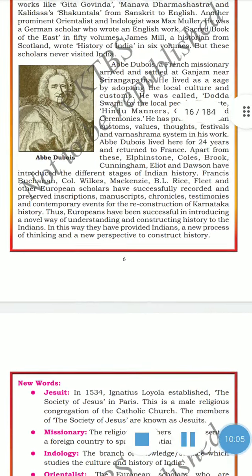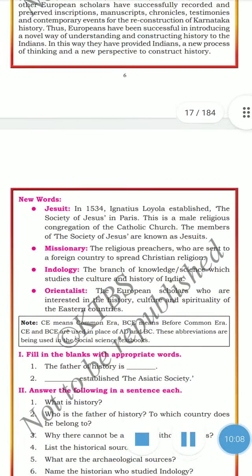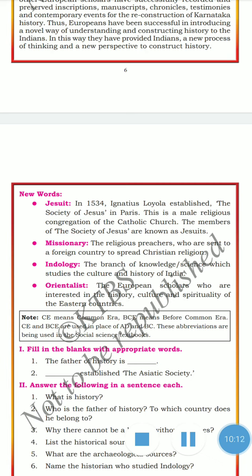In this chapter we also learned new vocabulary words. Jesuits: in 1534, Ignatius of Loyola established the Society of Jesus in Paris — a male religious congregation of the Catholic Church; members are called Jesuits. Missionary: religious preachers who are sent to a foreign country to spread the Christian religion. Indiology: the branch of knowledge or science which studies the culture and history of India. Orientalist: European scholars who are interested in the history, culture, and spirituality of the East and Eastern countries.